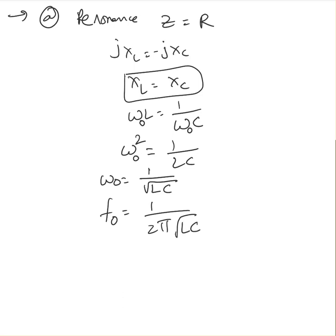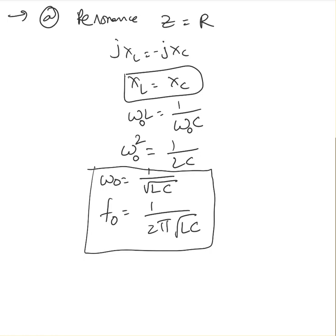These formulas are valid only for an RLC series circuit. You cannot use these formulas for any other circuit configuration. For other circuits, you have to find F naught for each example by making the imaginary part of the impedance equal to zero.